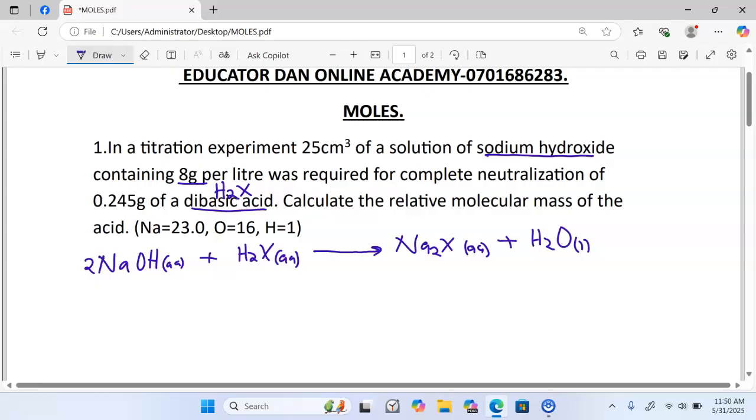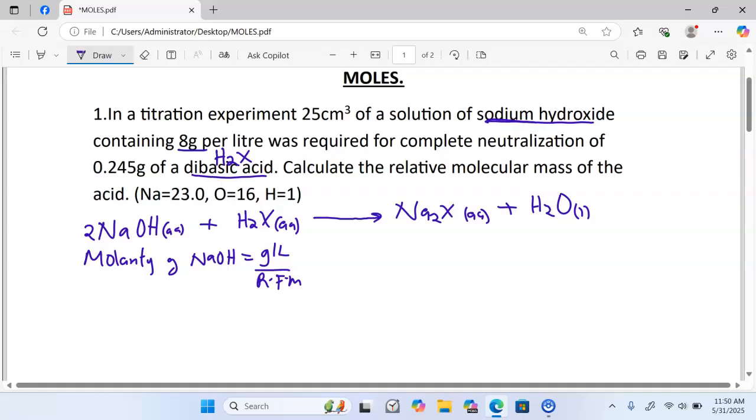Since we know the number of grams per liter, and we can calculate the relative formula mass of sodium hydroxide, we can start by getting the molarity of sodium hydroxide. Remember, to get molarity of sodium hydroxide, we simply take the number of grams in one liter, you divide by the relative formula mass. We have the grams per liter,